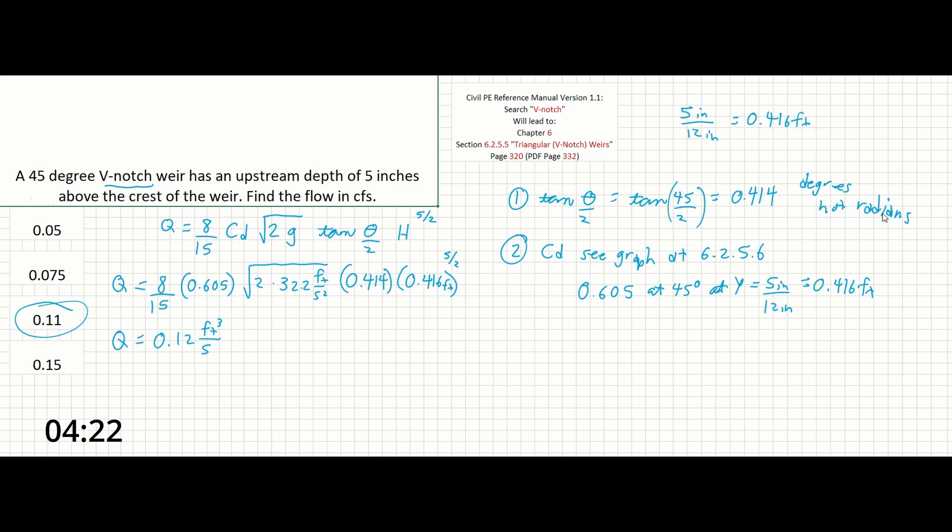That's about it for this problem. If you can use your context clues to go find the equation you need for the V-notch weir and determine how to solve for each of the other unknowns, so pretty much really just Cd, that's going to be all it takes to solve this problem.